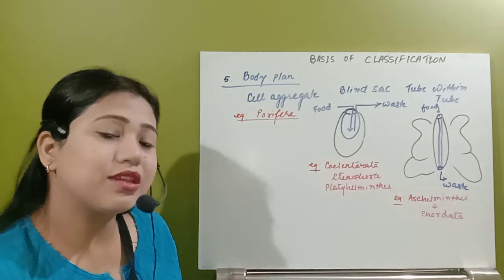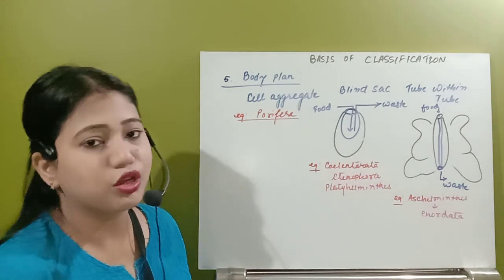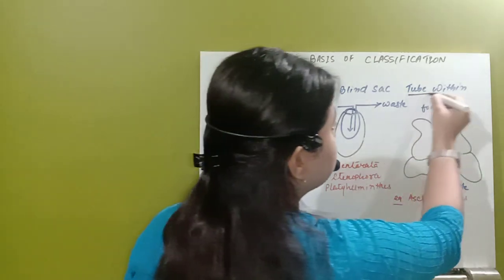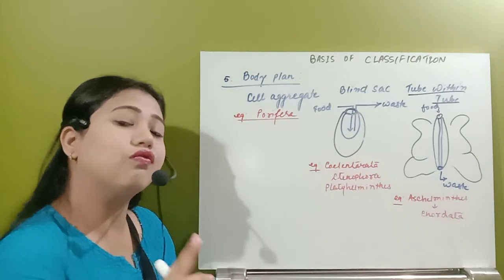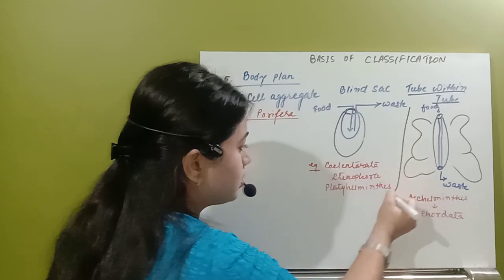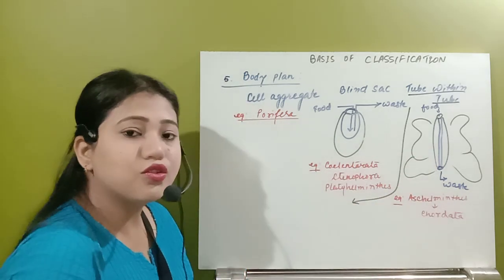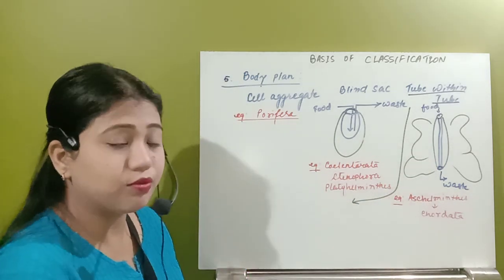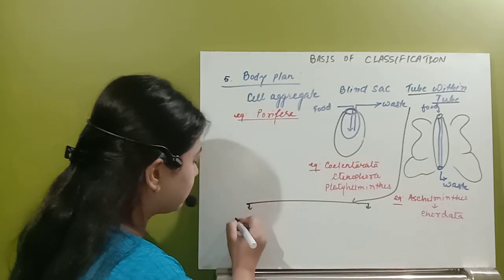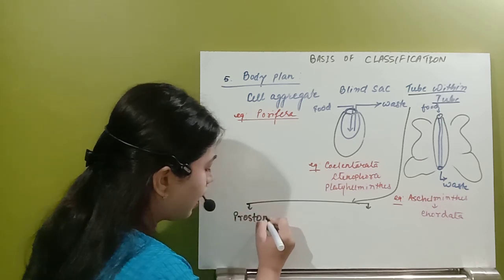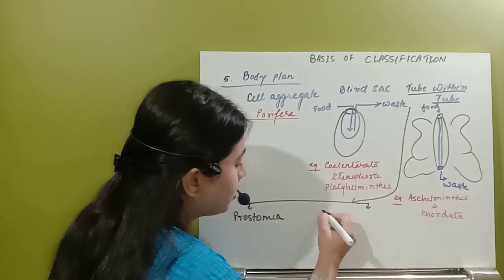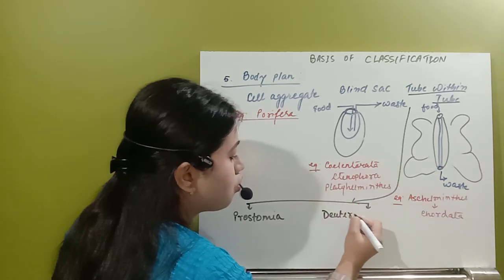Now, the tube within tube body plan is divided into once again two types. This tube within tube body plan - we are going to have two types. One is known as protostomia and the next type under tube within tube body plan is deuterostomia.